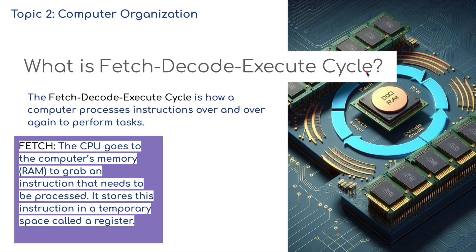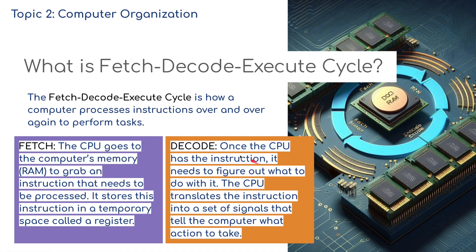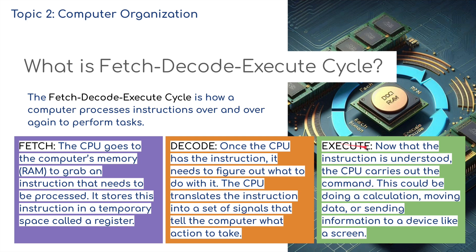What is the fetch-decode-execute cycle? The fetch-decode-execute cycle is basically how the computer processes instructions over and over again to perform tasks. First, it fetches — the CPU goes to the computer's memory, i.e. the RAM, to grab instructions that need to be processed, storing them in a temporary space called a register. It then decodes this instruction — the CPU translates it into a set of signals that tells the computer which action to take.